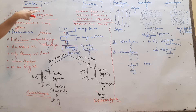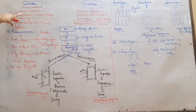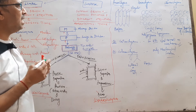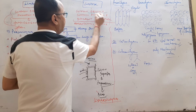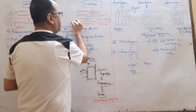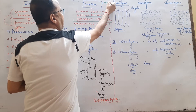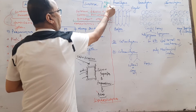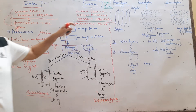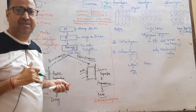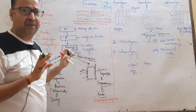Permanent tissue is of two types: simple permanent tissue and complex permanent tissue. Simple permanent tissue has common origin, common function, and common structure — it is homogeneous in nature. But complex tissue is heterogeneous, having common origin, common function, but different structure. In complex tissue there are two types: xylem and phloem, which will be discussed in the next class as a separate topic.